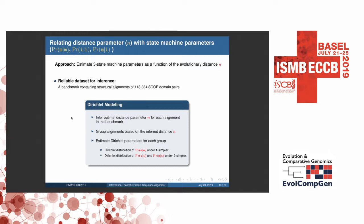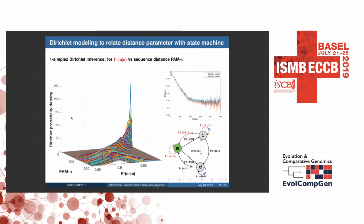So for this, we used a reliable data set of structural alignments over around 118,000 SCOP domain pairs. What we did was we inferred or estimated the optimal N for each structural alignment, and then we grouped them according to the N. And this was done from 1 to 1,000 of N. And then for each group, we estimated the unit 1 simplex-related and unit 2 simplex-related free parameters separately.